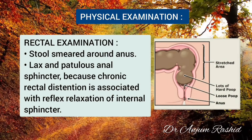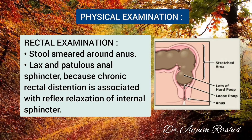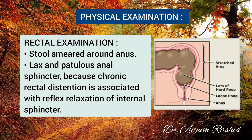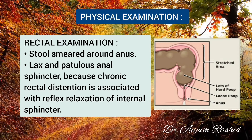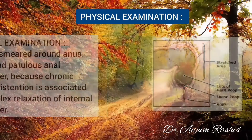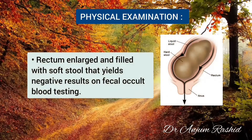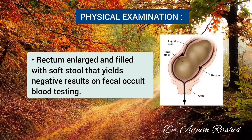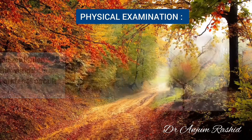Rectal examination shows stool smeared around the anus and a patulous anal sphincter, because chronic rectal distension is associated with reflex relaxation of the internal sphincter. The rectum is enlarged and filled with soft stool that yields a negative result on fecal occult blood testing.